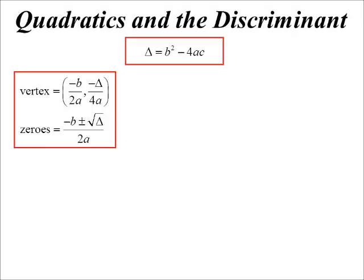The zeros, well, that's just the quadratic formula. But instead of writing plus or minus the square root of b squared minus 4ac, I've just written plus or minus the square root of the discriminant. That's no great revelation for that part.